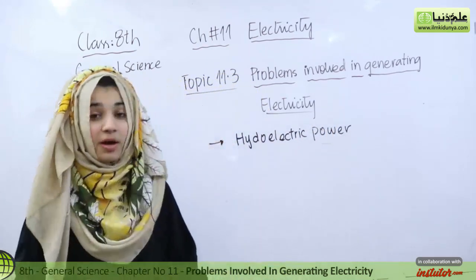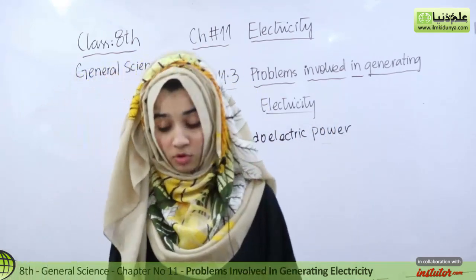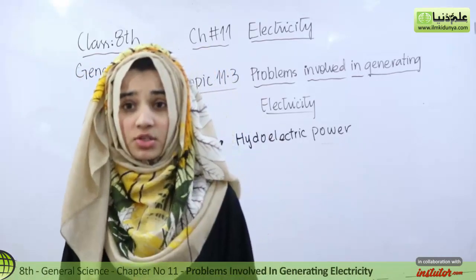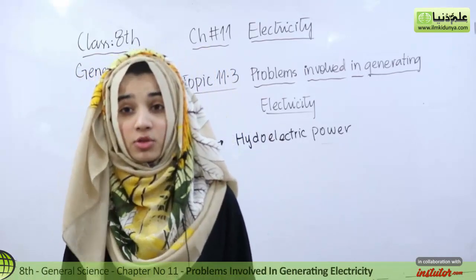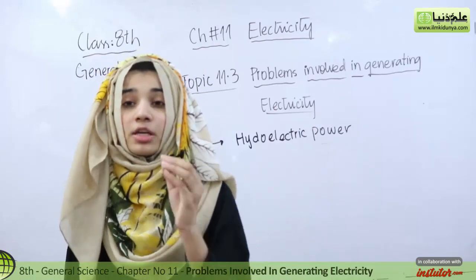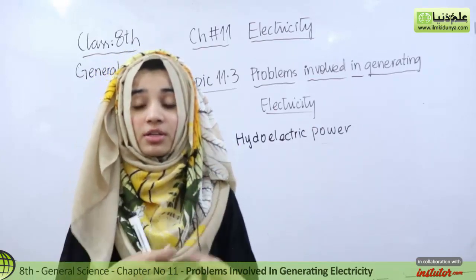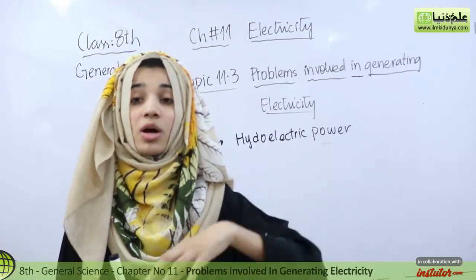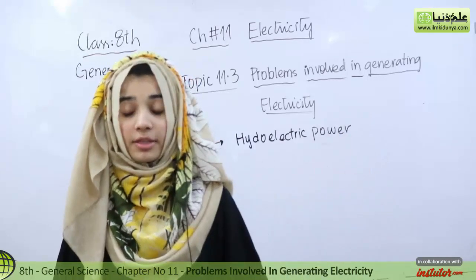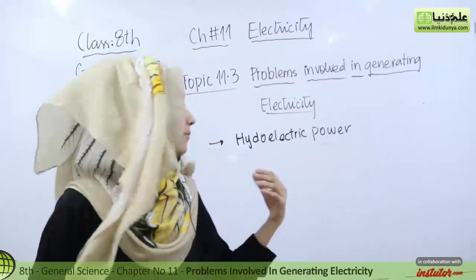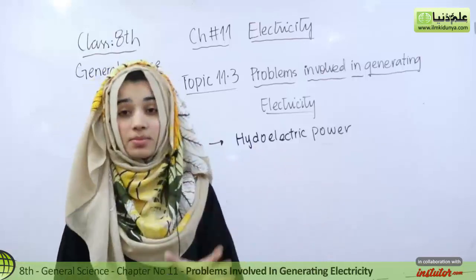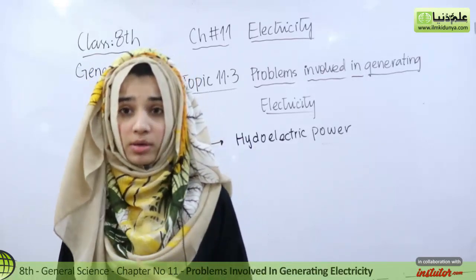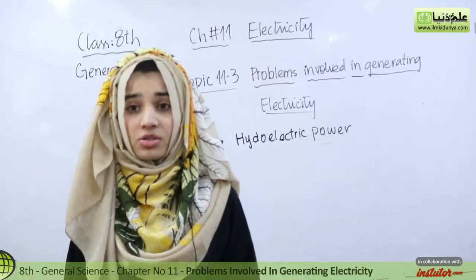Hydroelectric power is electricity generated using water to run our generators. When we run the generators, we produce electricity. This is the cheapest source — it means there is no pollution, and water is a natural source.